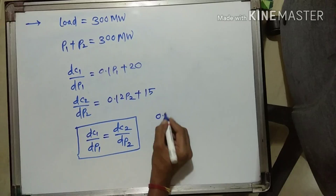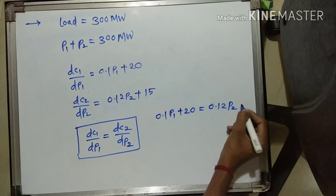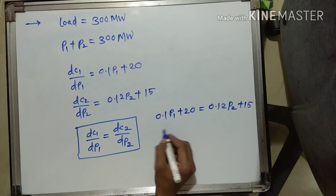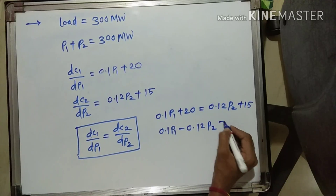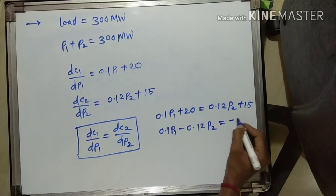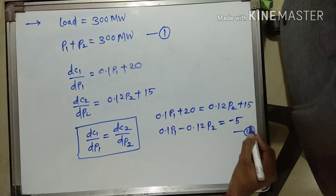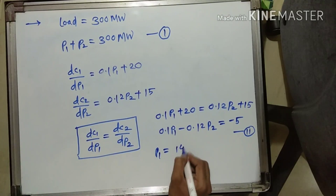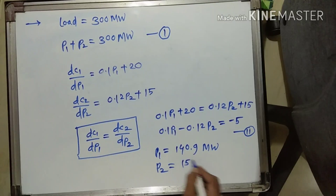It becomes: 0.1P1 + 20 = 0.12P2 + 15. Rearranging, taking P1 and P2 to the left-hand side: 0.1P1 − 0.12P2 = 15 − 20 = −5. This is equation 1, and P1 + P2 = 300 is equation 2. Solving equations 1 and 2, we get P1 = 140.9 megawatt and P2 = 159.09 megawatt.